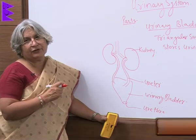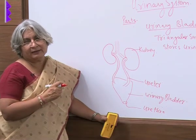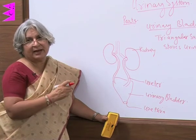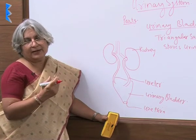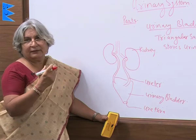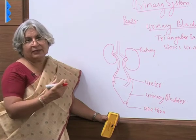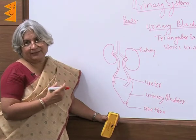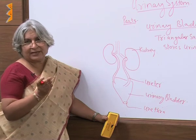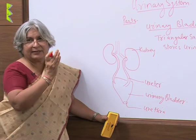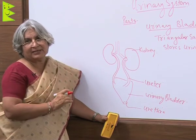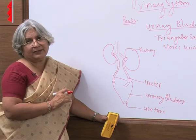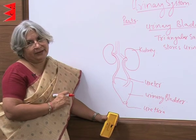In the case of men, the urinary and reproductive passages are common, which is why we call it the urinogenital duct. But in women, there is a separate urinary duct and a separate opening for menstruation and delivery. So the reproductive passage and the urinary passage are separate in women but the same in men.